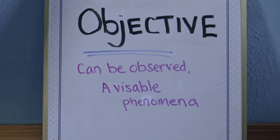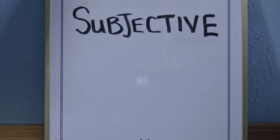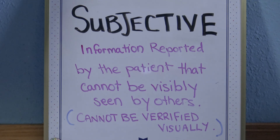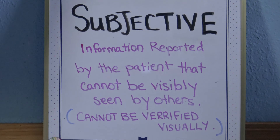Objective — an objective is a complaint, phenomenon, or issue by a patient that can be observed. It's a physical, visible phenomenon. It can be observed by everyone, not just by the patient reporting it. Subjective — subjective is information reported by the patient that cannot be seen by others, like feeling hot, feverish, numbness, or nauseous. It's something you cannot see visually but the patient is reporting to you, and it still needs to be documented.